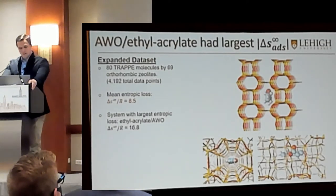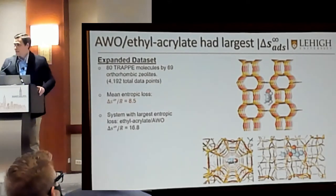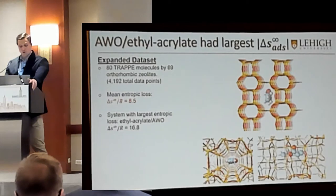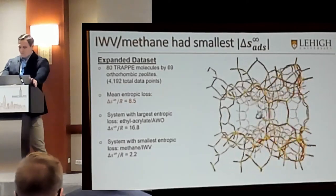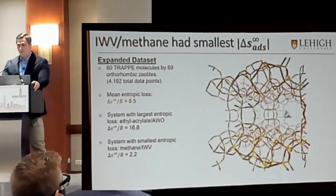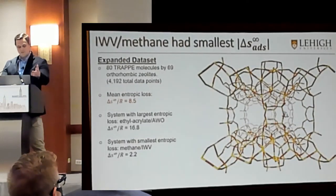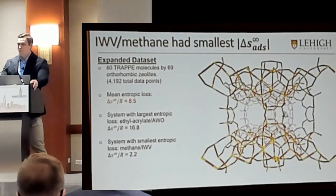The molecule that was able to fit in that zeolite was ethyl acrylate. I do want to mention that we do have larger molecules, but they were just unable to converge within these zeolites. Our smallest entropic loss was, ironically, our smallest molecule within the largest zeolite in our entire dataset — that was IWV, which has a pore size of almost a nanometer in diameter.